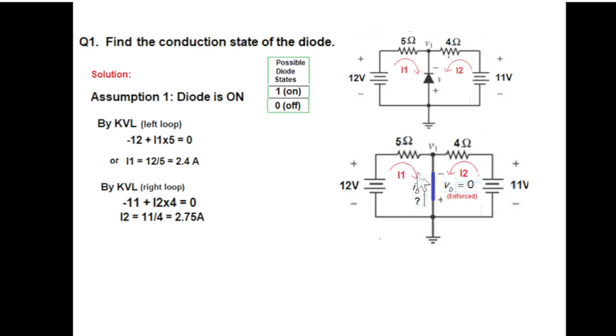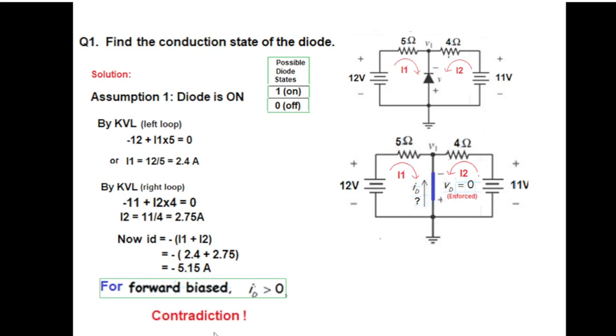Now we have found the two currents i1 and i2. What is the relation with id? You can see these two currents are coming from top to bottom, but our id is going from bottom to top. That means the summation of the two will have the magnitude of id but the direction is opposite. So we can write that id is equal to minus i1 plus i2. Putting the value, we get id to be minus 5.15. Now our condition, that for forward bias we have assumed this to be forward bias, id has to be positive, whereas id is negative in this case. That means there is a contradiction.